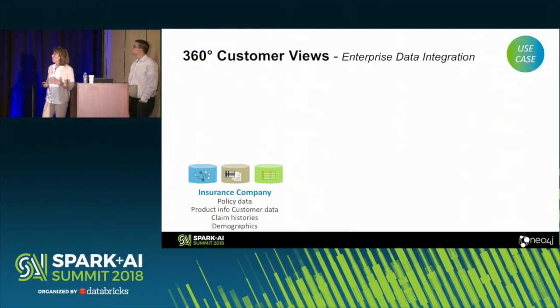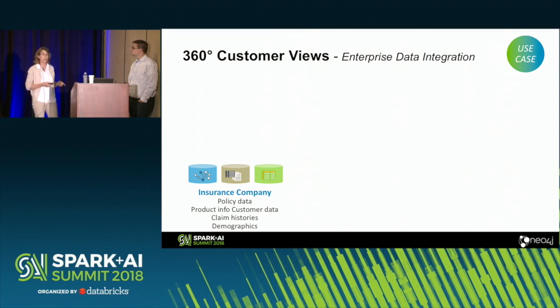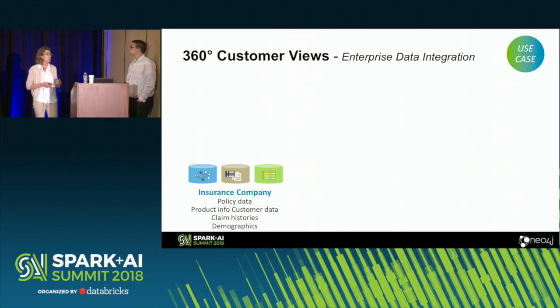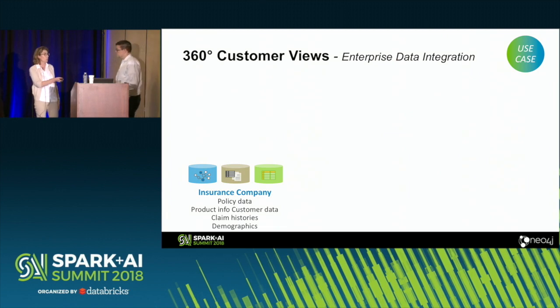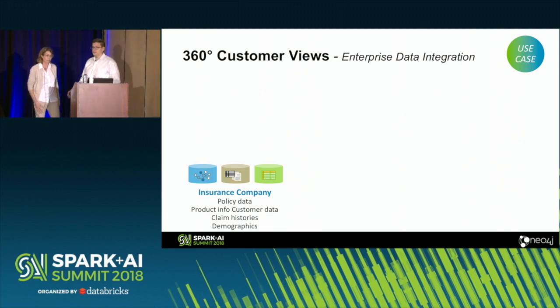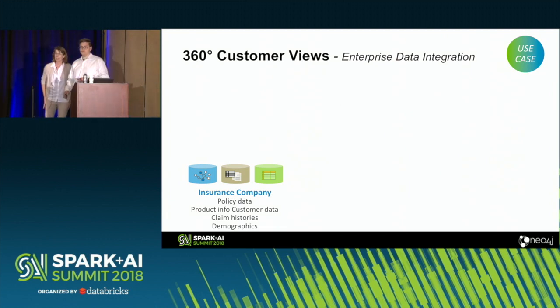We'll also talk about progressive graph analysis — think of that as composable queries. Your output graph can become your input for your next query, and that query's output becomes the input for the next. At every step of the way, you're adding more value to your data without touching the original source. One very common use case is 360-degree customer views, which David is going to talk about.